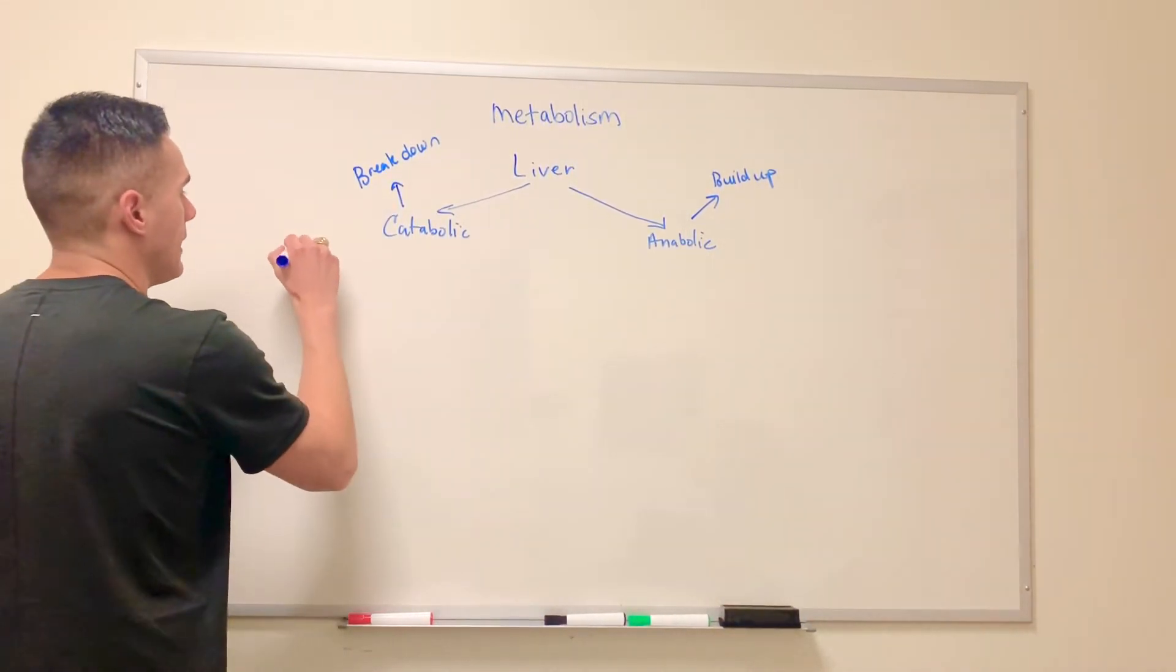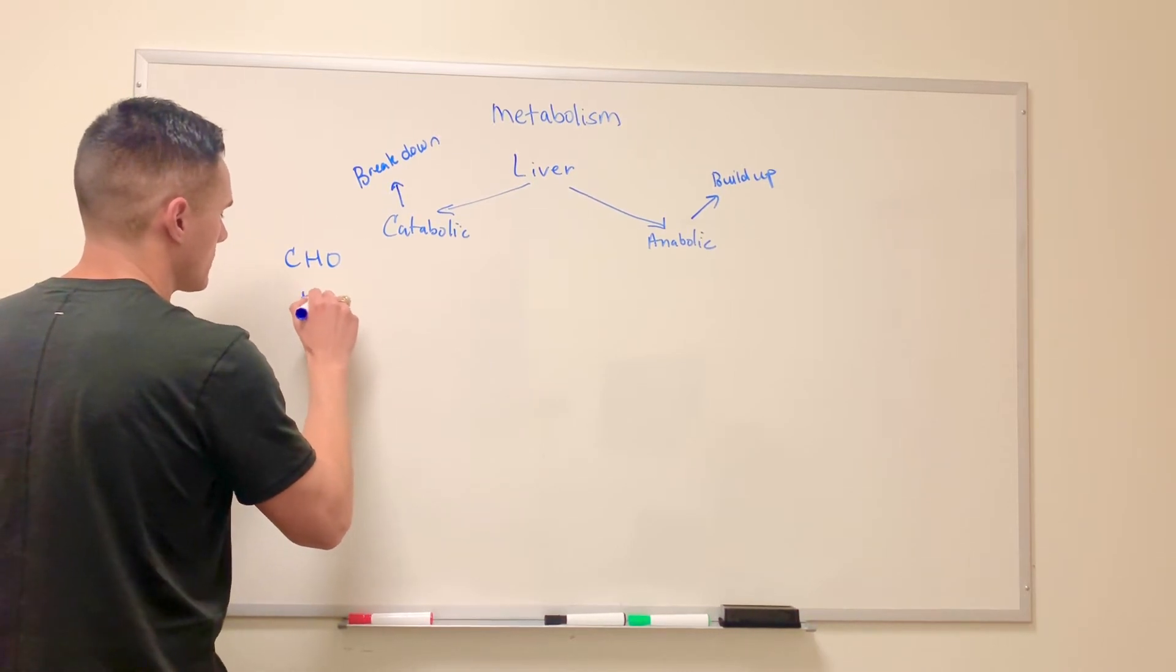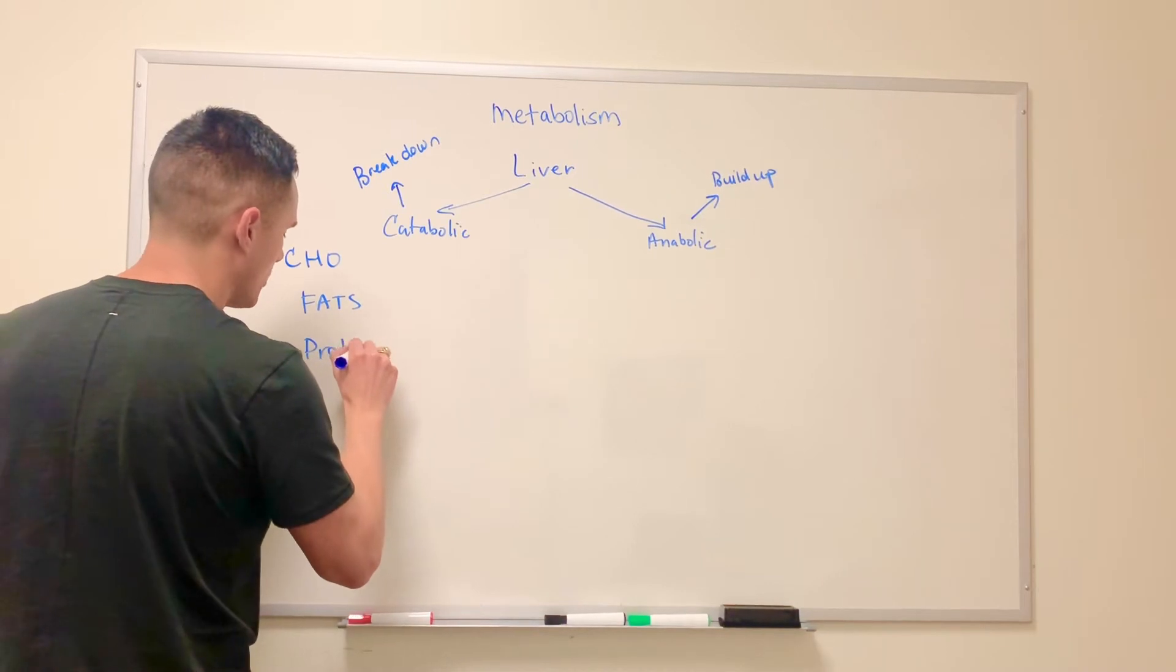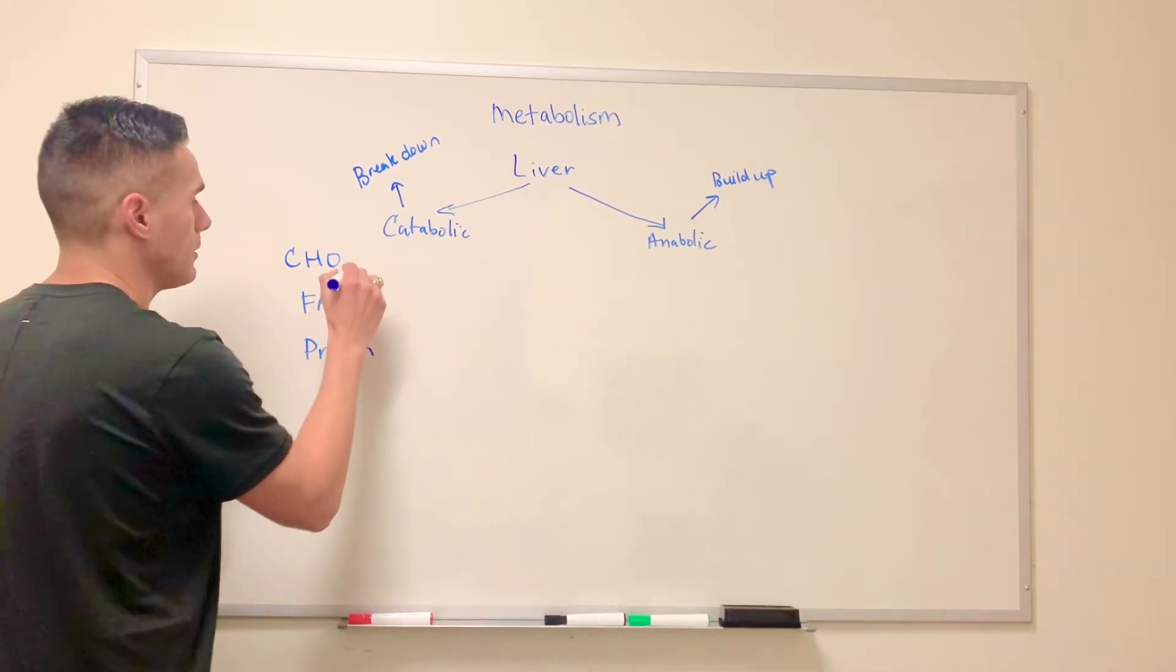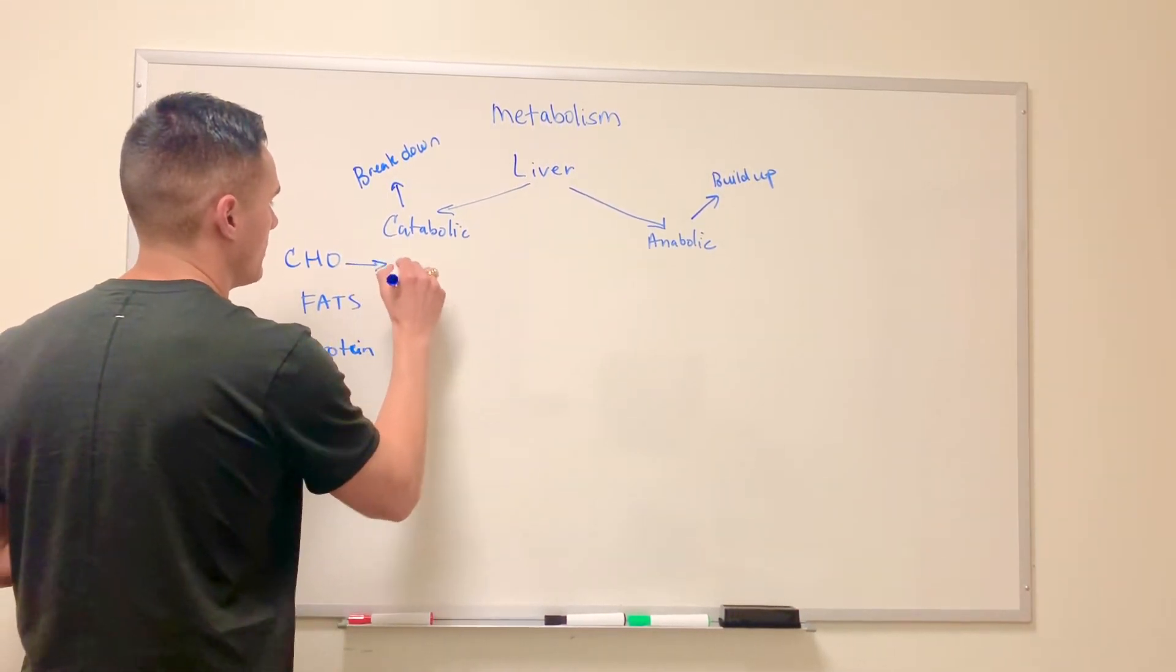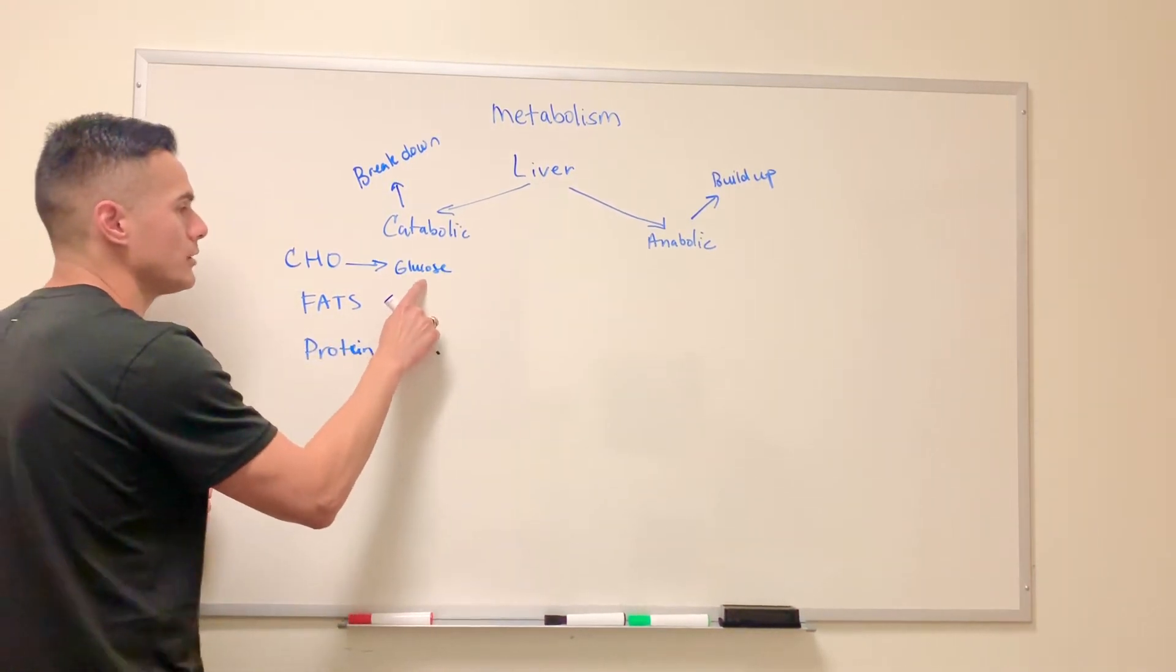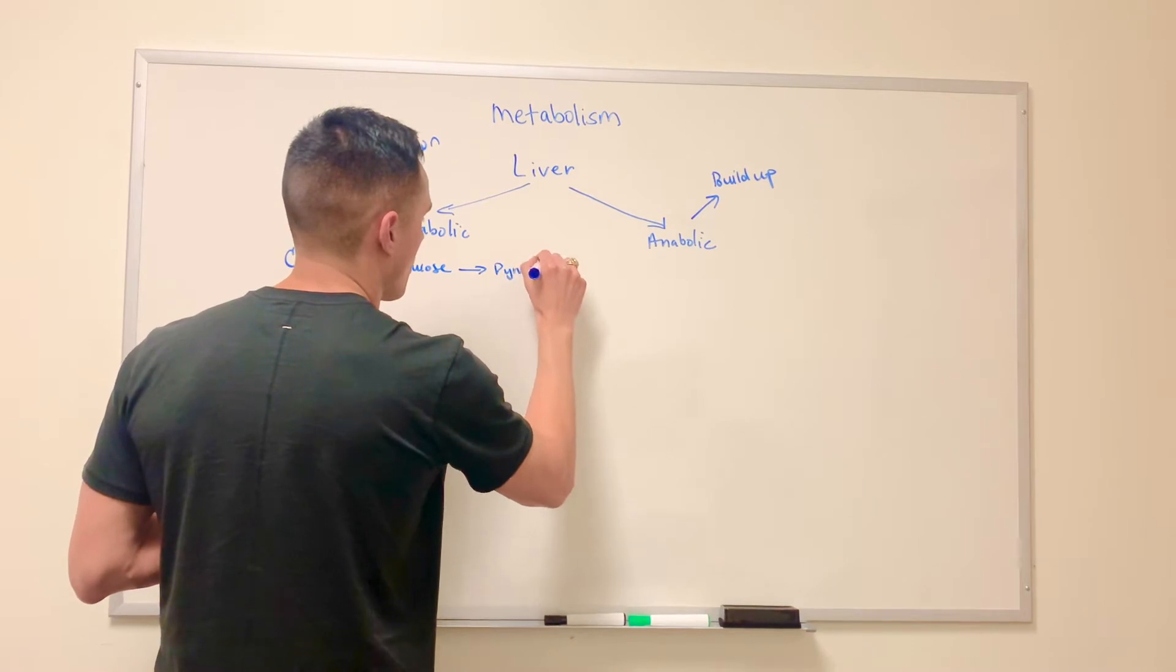So as we've learned, we can use carbohydrates, fats, and proteins as the polymers. Carbohydrates can be broken down into glucose, and glucose can be used to form what's known as pyruvate.